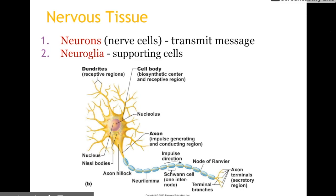Do you remember what the 'glia' part meant from the reading? It's a Greek reference. It means glue — scientists thought it was just a glue that held all the neurons in place and didn't really do anything. But in reality, we're finding that they have very important functions. They help sustain the nervous system, and there's probably much more that we still don't know about them.